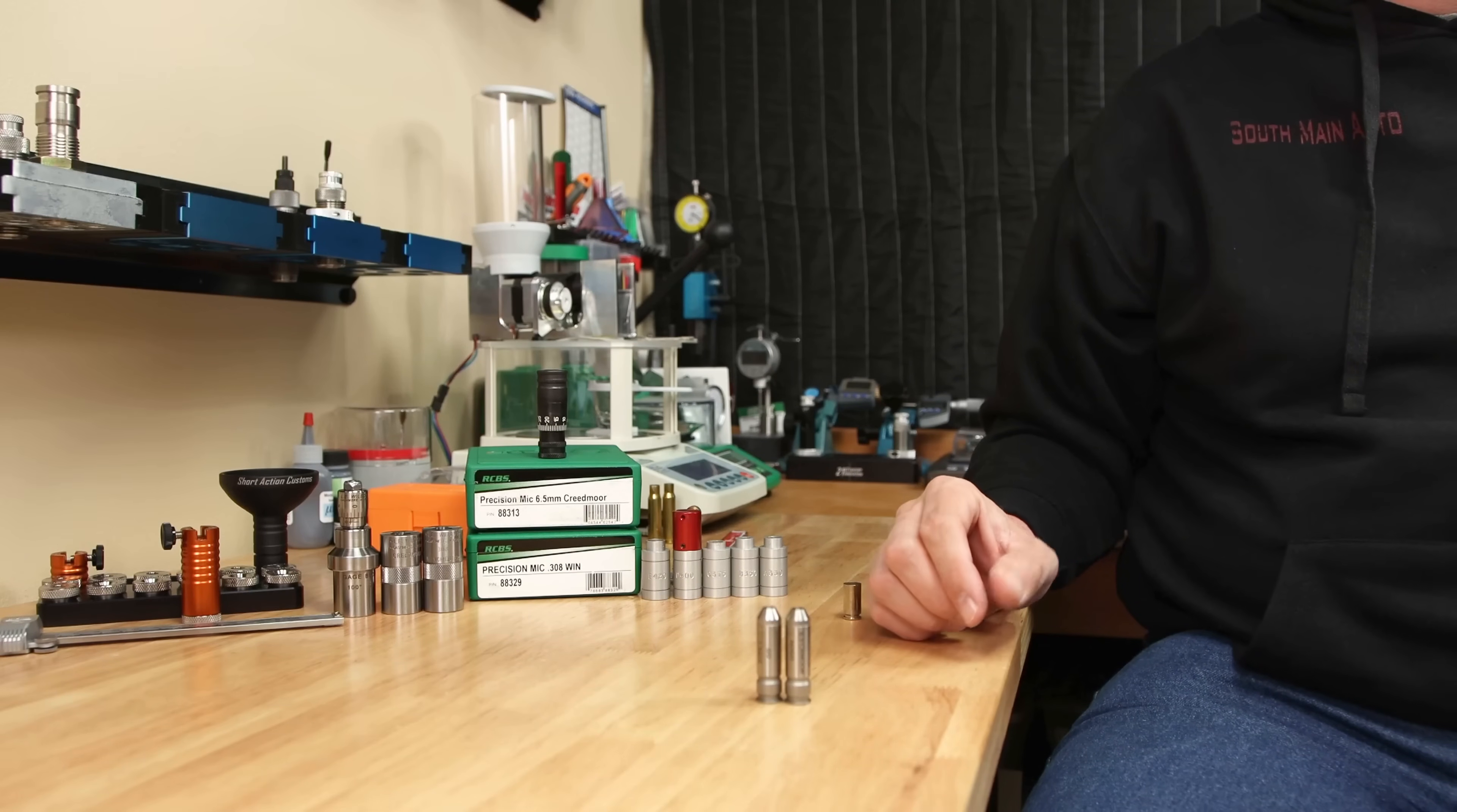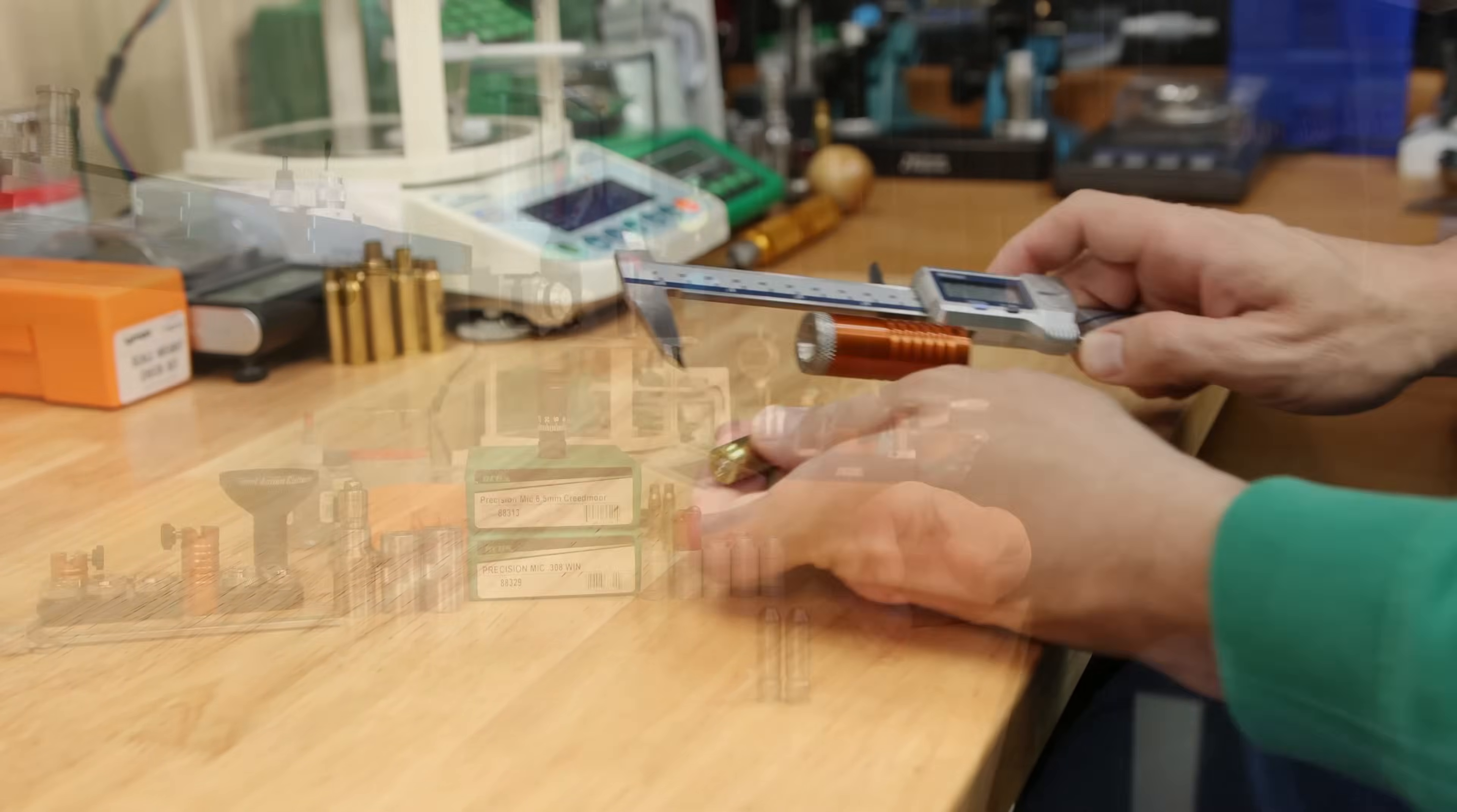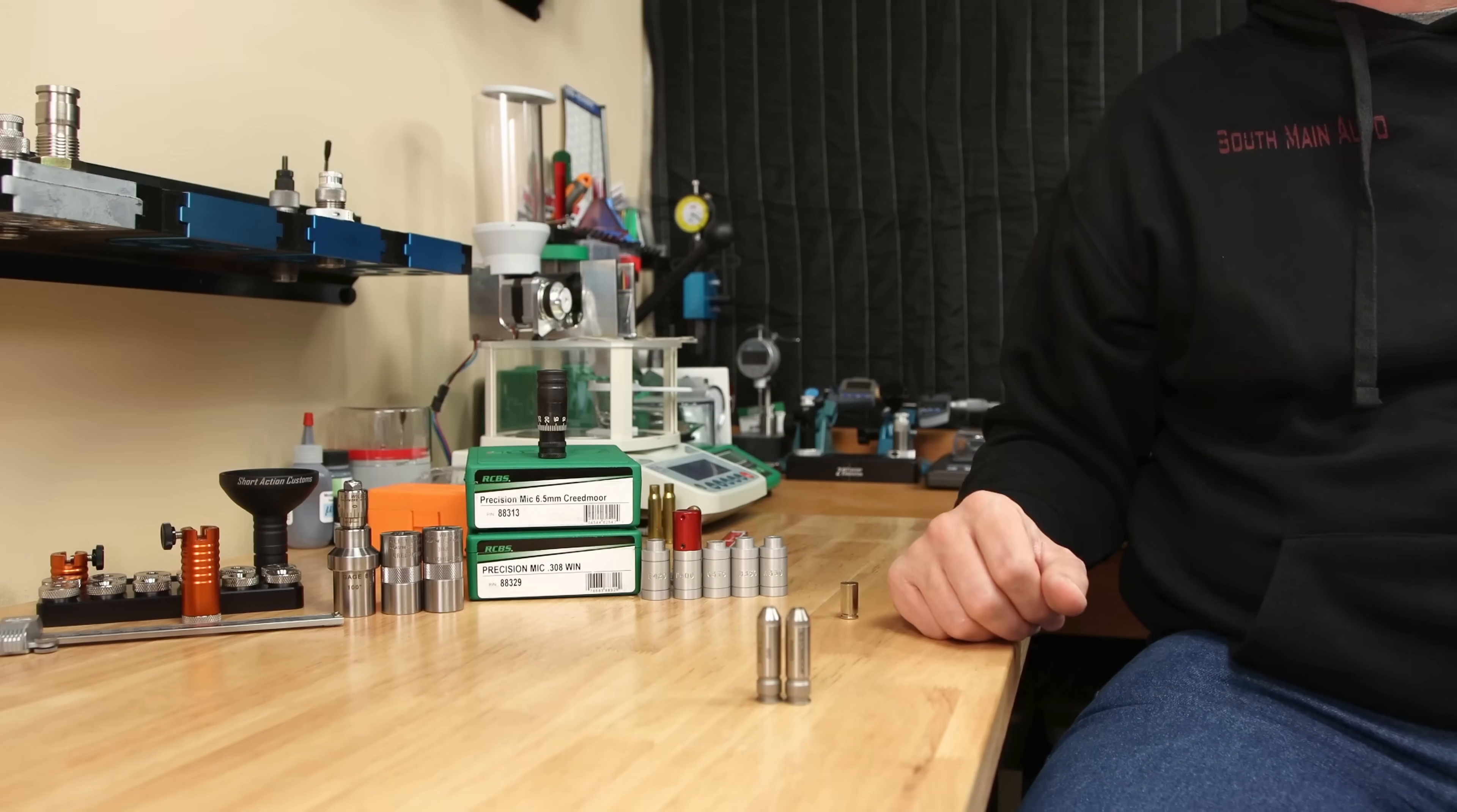Most people when they talk about measuring headspace are using this term very loosely. What we're typically doing is using some type of a comparator and measuring this dimension. This allows you to size for that magical 2 or 3 thousandths bump that everyone's talking about. So now that we know the 0.4 inch dimension, we can start finding suitable comparators.